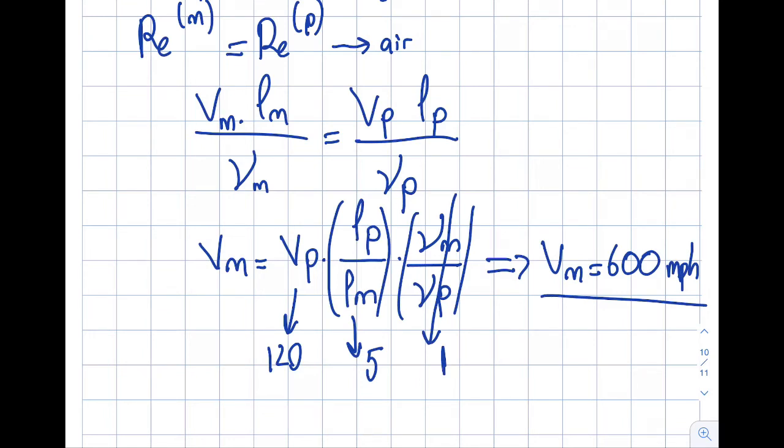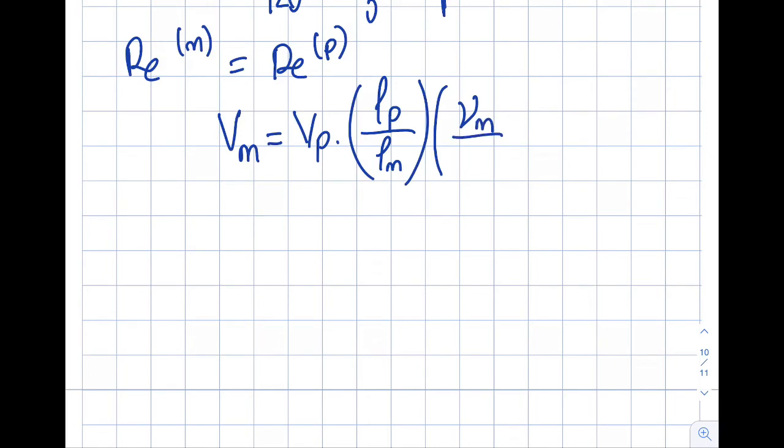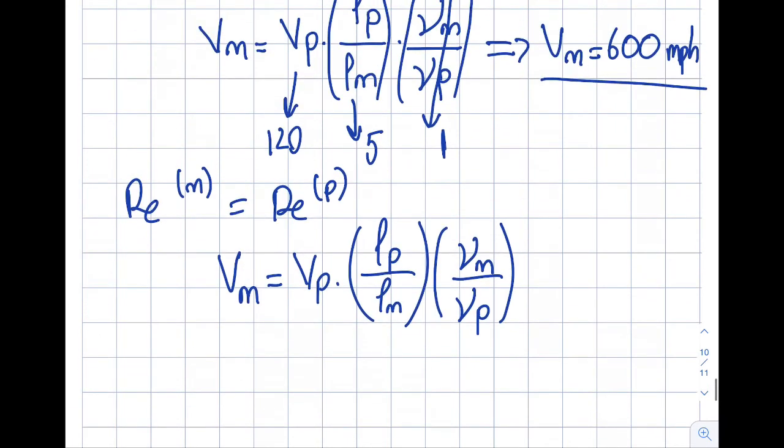Let's reassess for the water case. Reynolds number of model still equals Reynolds number of prototype. Writing this out, model velocity equals prototype velocity times Lp divided by Lm times kinematic viscosity model divided by kinematic viscosity of prototype.